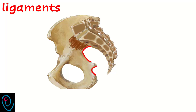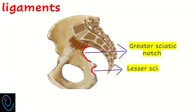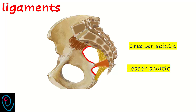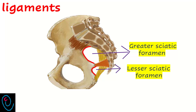Before the ligaments, these curvatures are called the greater sciatic notch and the lesser sciatic notch. The ligaments convert them into openings in the pelvic wall called the greater sciatic foramen and lesser sciatic foramen. These form an exit and entry for some structures between inside and outside the pelvis.